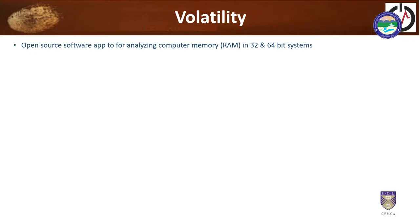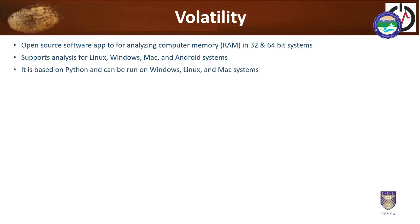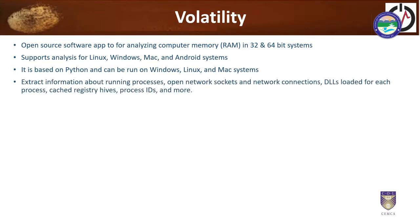Volatility is one of the best open source application software that can be used for analyzing a computer RAM or computer memory in 32-bit and 64-bit operating systems. It supports Linux, Windows, Mac, and Android. It is primarily based on Python, but can be run on Windows, Linux, and Mac systems — you just need to have Python installed. After running it, you can extract information about processes running in memory, open sockets, network connections, dynamic linking libraries (DLLs) loaded for each process, cached registry hives, and process IDs.